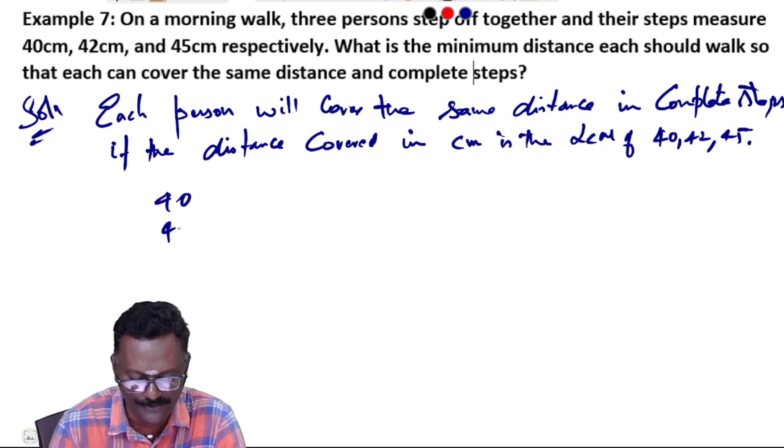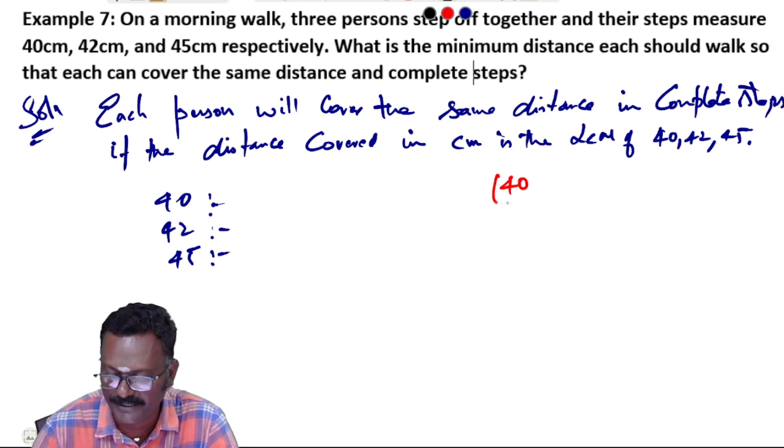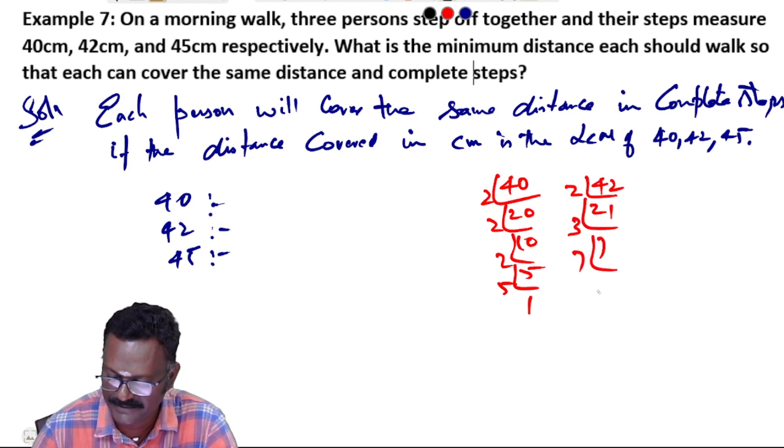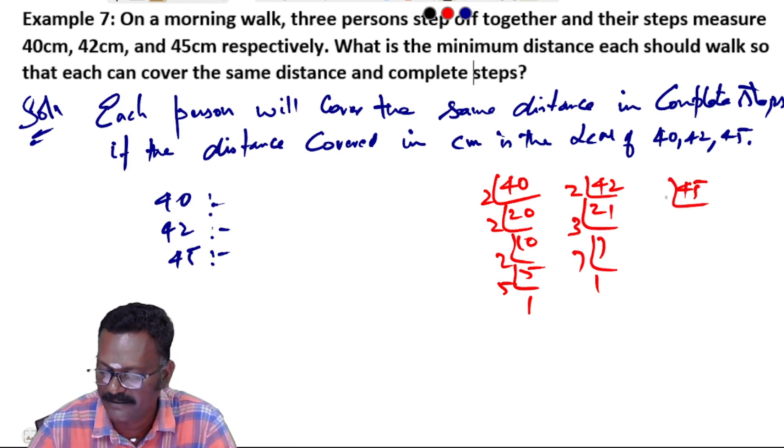Now we'll find the prime factorization. 40: 2 times 20, 2 times 10, 2 times 5, 5 times 1. 42: 2 times 21, 3 times 7, 7 times 1. 45: 3 times 15, 3 times 5, 5 times 1.